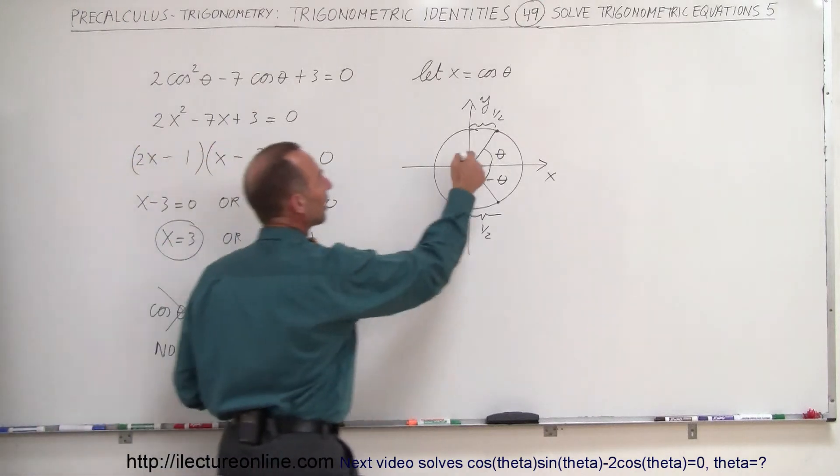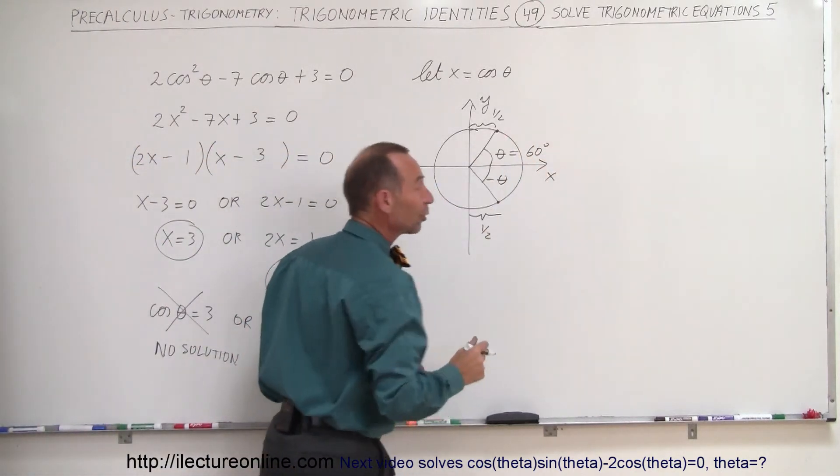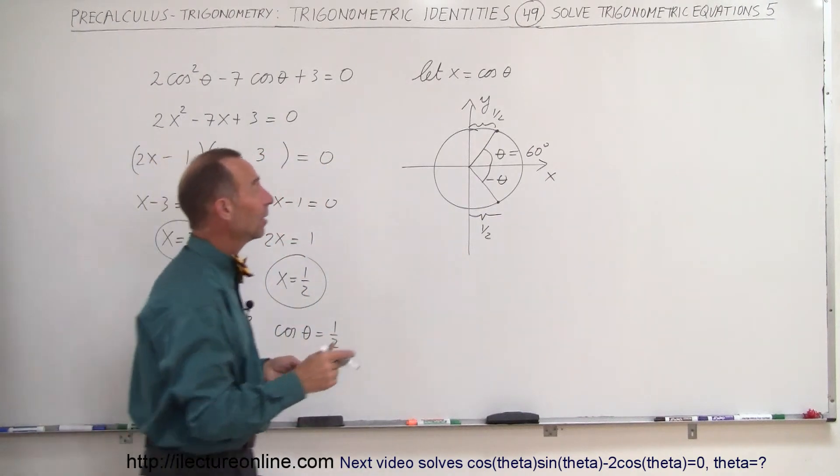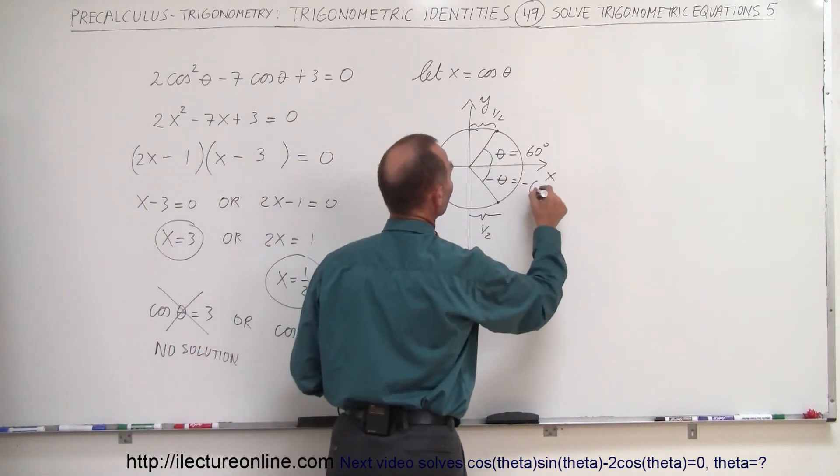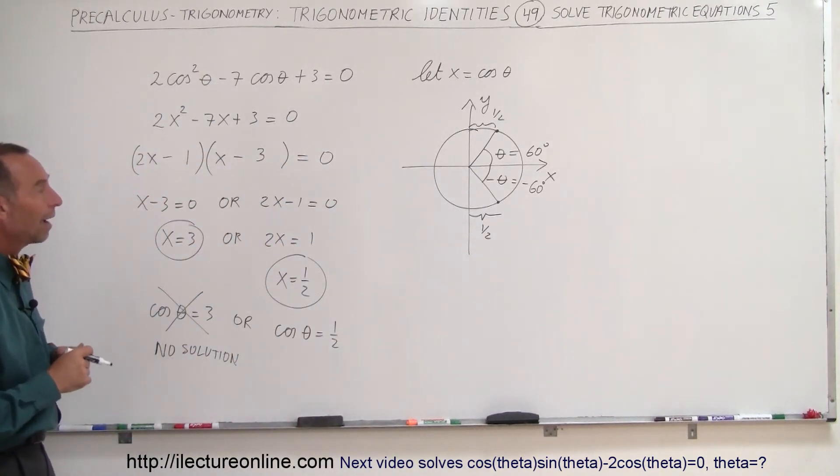Well, of course, here we can see that this must be 60 degrees. When the theta is 60 degrees, the cosine of 60 is 1 half, and, of course, minus 60 degrees, we also get the value of the cosine of that angle equal to 1 half.